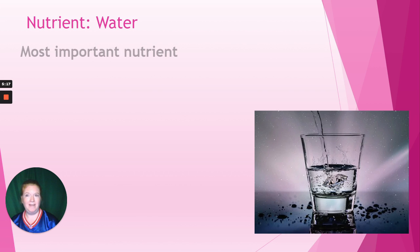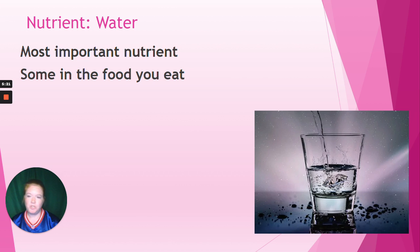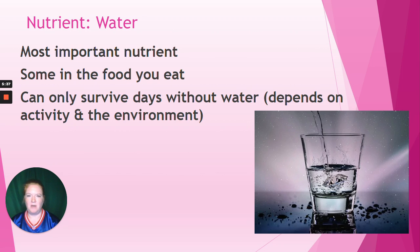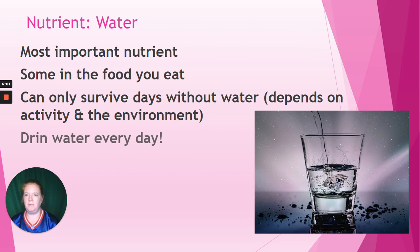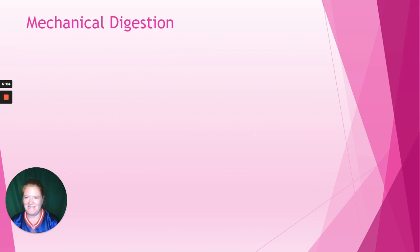And then water — this is really the most important nutrient, because roughly two-thirds of our body is made up of water. We can get some water from food we eat, especially fruits and vegetables like cucumbers and watermelon, which are high in water content. We can only survive days without water. The amount of time depends on activity level — are you running a marathon or sleeping? — and also the environment, whether it's cool or extremely hot or cold. So drink water every day.